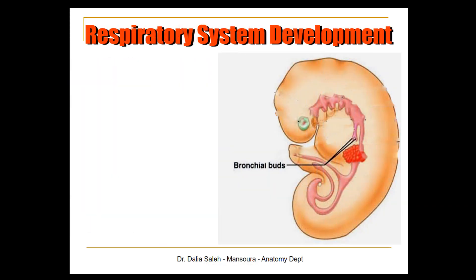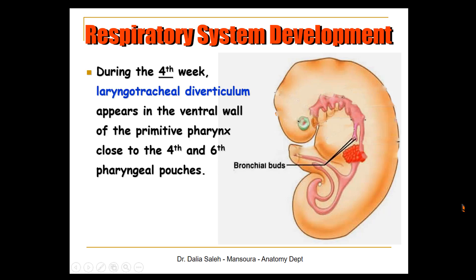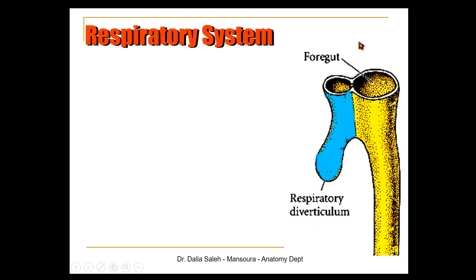Now let's understand how the respiratory system develops. In a side view of an embryo, we can see the head region with the pharyngeal arches, the primitive pharynx, the foregut, midgut, and hindgut. The first appearance of the respiratory primordium is during the fourth week of development — there is a bud called the laryngotracheal diverticulum or laryngotracheal bud. It appears in the ventral wall of the primitive pharynx close to the fourth and sixth pharyngeal pouches. In a side view, the foregut is represented in yellow and the respiratory diverticulum in blue.